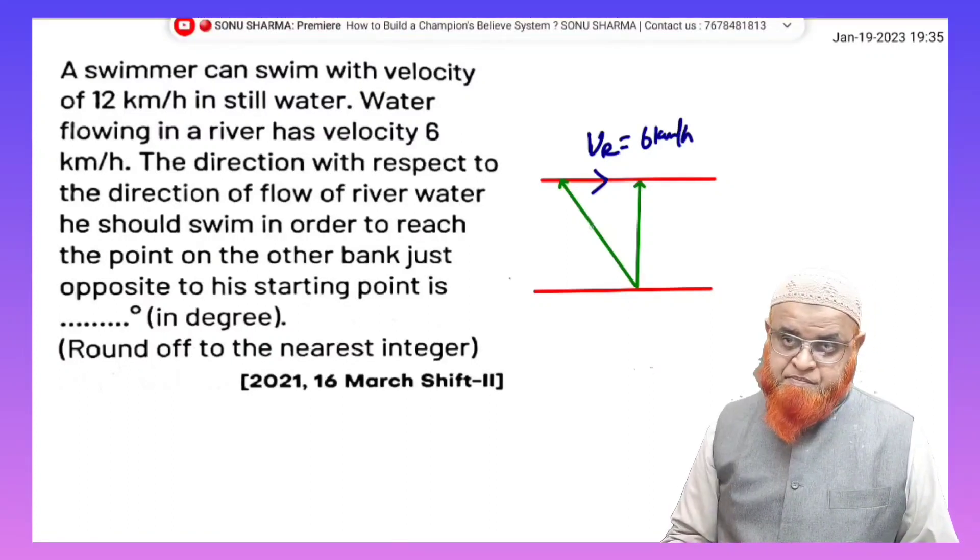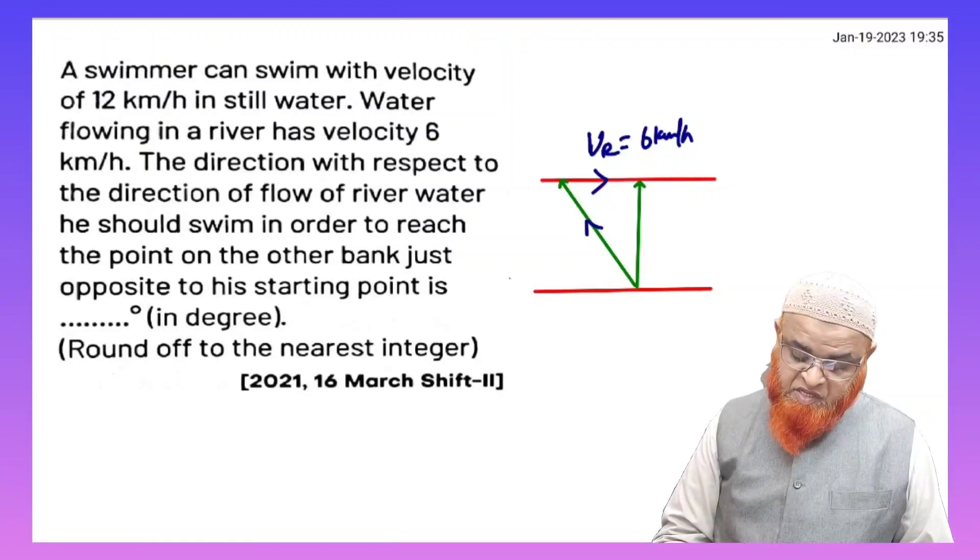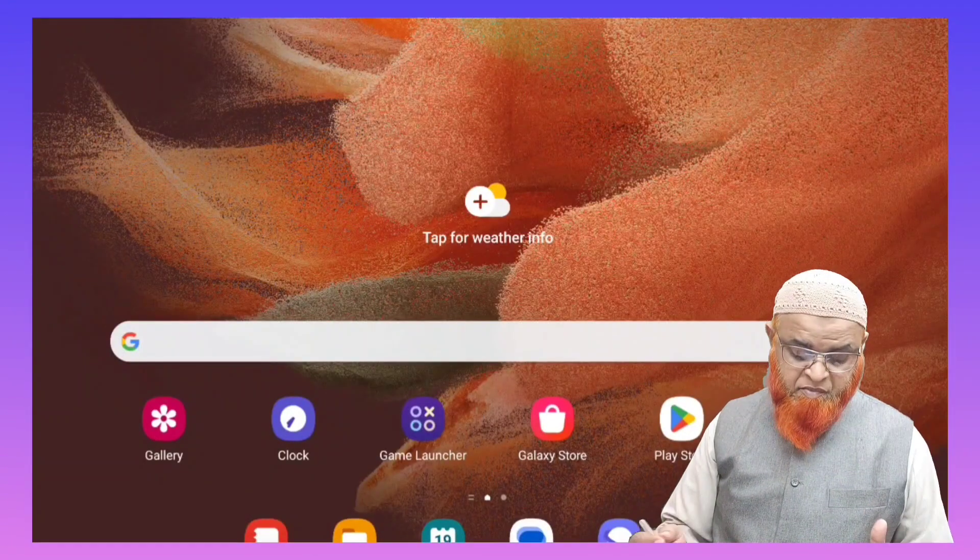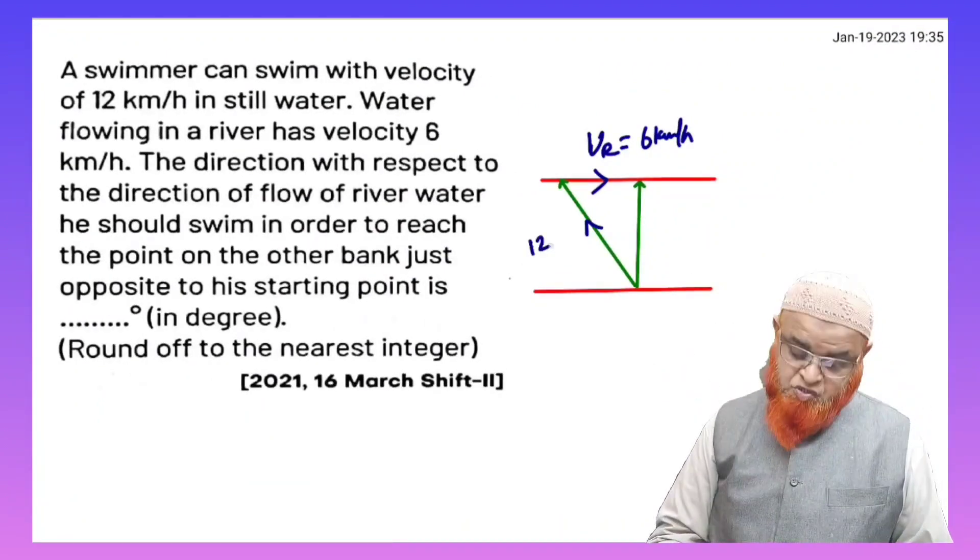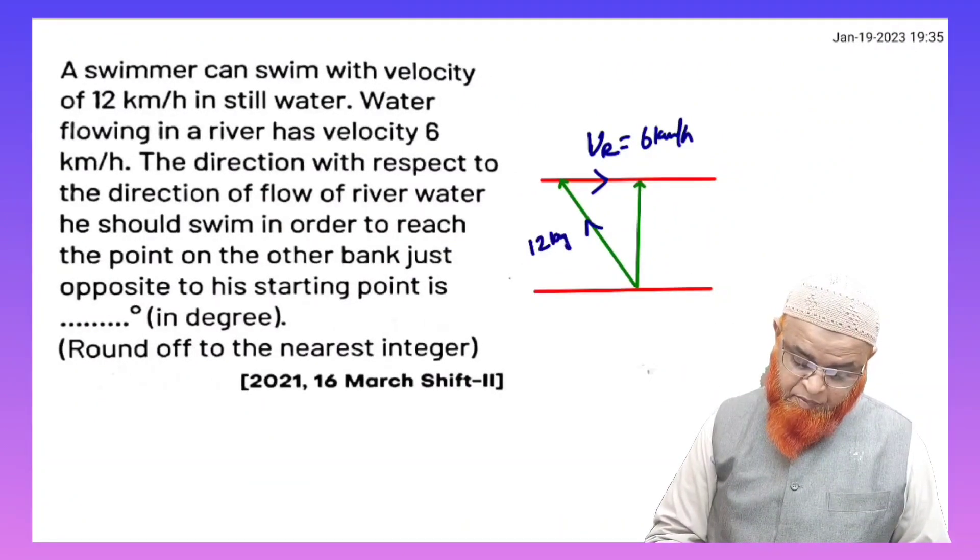And what is the boat velocity, which is in this direction, the swimmer velocity? Which is going to be 12 kilometers per hour, as given in the problem.